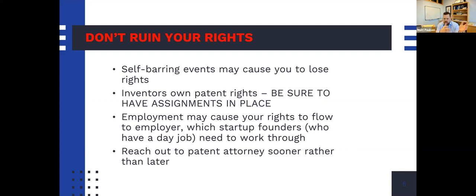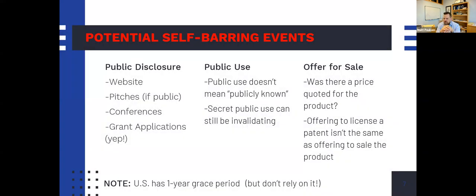Because if things don't go right on a couple of these bullet points, your ability to actually capture anything could be pretty low. Here's a laundry list of things you should not do before getting a patent application on file — what we call the self-barring events: public disclosure, public use, and offer for sale. Public disclosure — really should be called printed publication — includes things like websites, pitches, startup pitches, conferences, academic conferences, and trade shows.